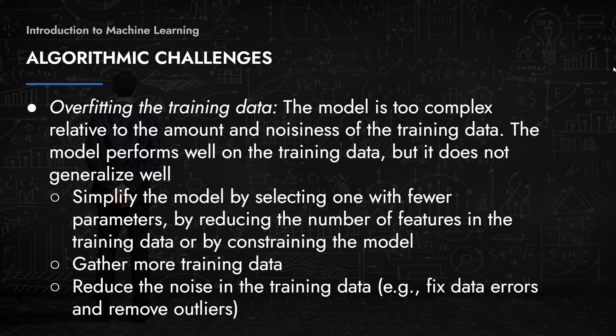There are also algorithmic challenges. Overfitting the training data occurs when the model is too complex relative to the amount and noisiness of the training data. The model performs very well on the training data but does not generalize well to new data. One way to solve this is to simplify the model by selecting one with fewer parameters, reducing the number of features in the training data, or by constraining the model.